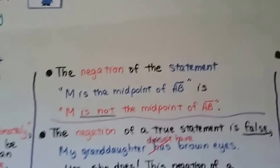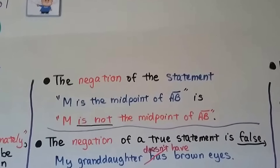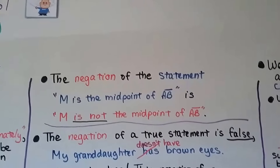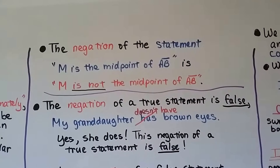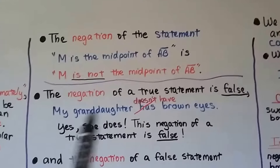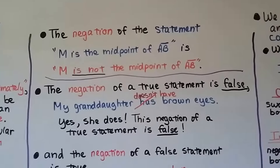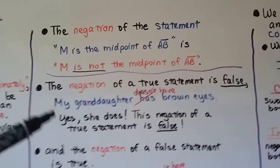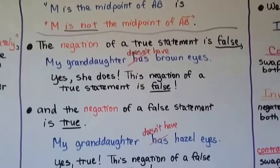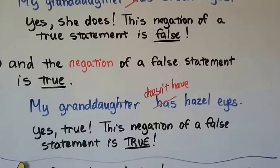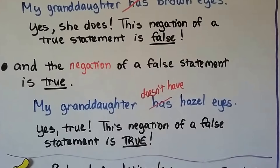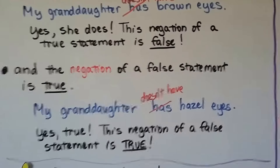Negation of the statement 'M is the midpoint of segment AB' is 'M is not the midpoint of segment AB.' We negated the statement by putting 'is not' there instead of 'is.' The negation of a true statement is false. If we have a true statement and we negate it, we turn it into a false statement. My granddaughter has brown eyes — if I negate this, I say 'doesn't have brown eyes,' but my granddaughter does have brown eyes, so this negation of a true statement is false. The negation of a false statement is true. 'My granddaughter has hazel eyes' is a false statement, so if I negate it and say 'doesn't have,' now it's true — this negation of a false statement is true because she doesn't have hazel eyes.